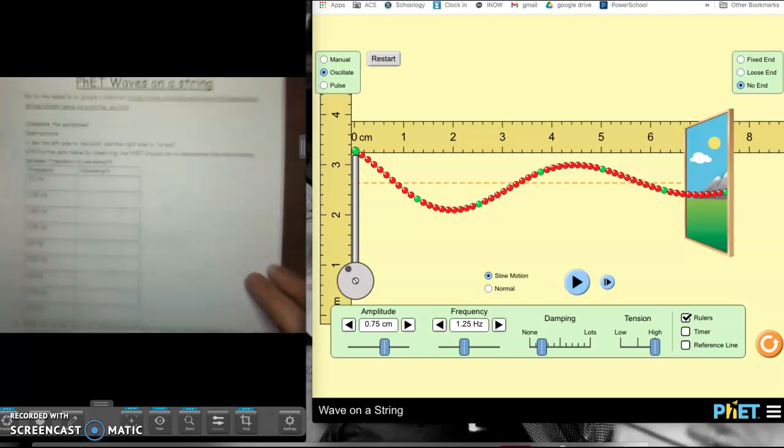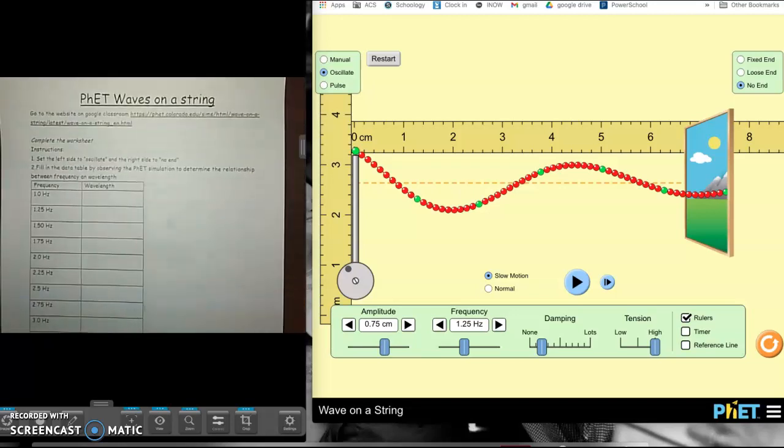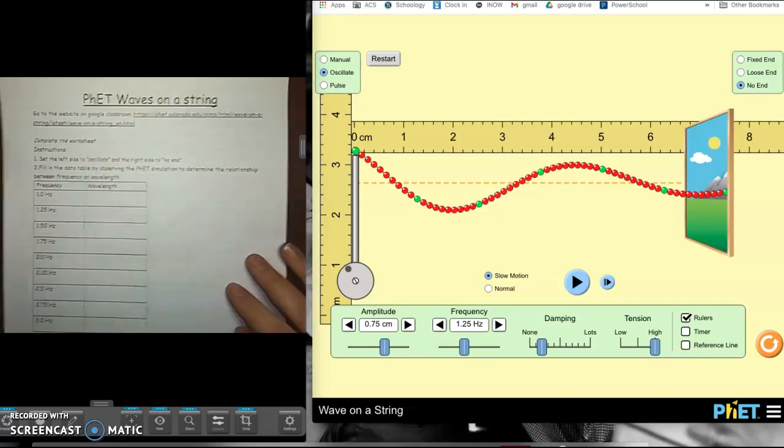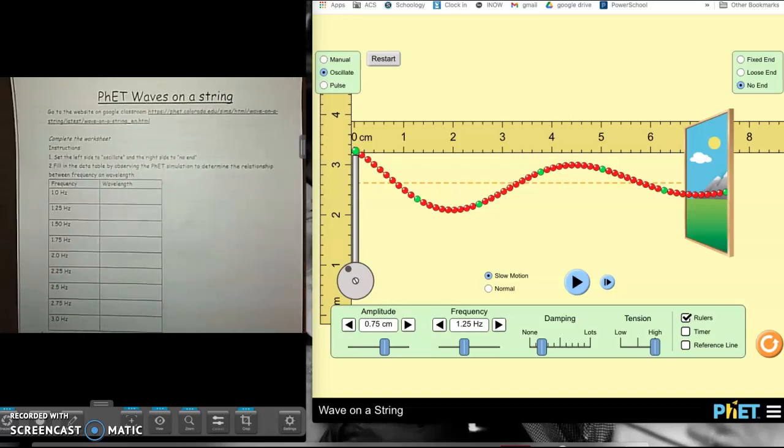Okay, so this is the PhET waves on a string. PhETs are simulations that allow us to see a perfect scenario of a particular simulation that we're trying to use, and we know in the real world if we were using like a beaded chain, it's not a perfect scenario. So it's a little bit more difficult than it would be if it was a perfect scenario like we can see on a PhET.